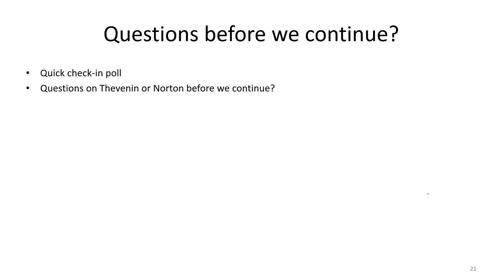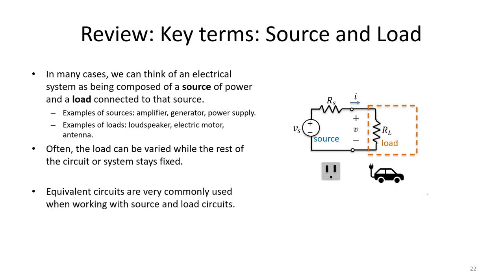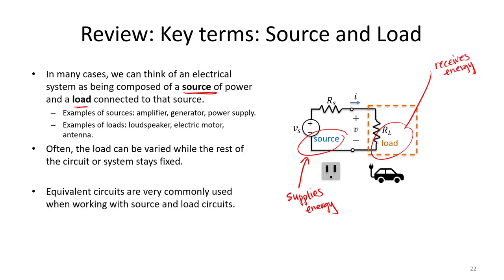Let's go ahead and continue on with the maximum power transfer theorem. You'll remember from our previous video we introduced the concept of a source and a load — this is especially important when we talk about maximum power transfer theorem. The source is the thing that supplies energy to our circuit, and the load is the thing that receives energy. Sources could be power supplies, generators, or batteries. Loads could be things like electric motors, antennas, or speakers. Often the source will stay fixed but different things could be plugged in to provide different loads, like a power outlet.